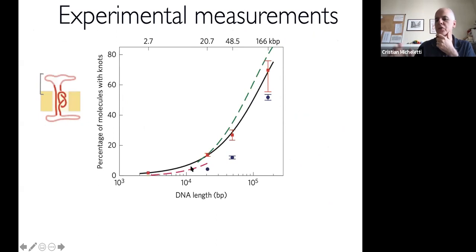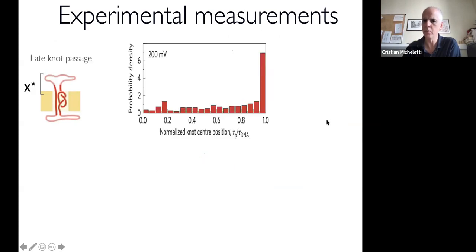First, regarding the incidence of knots, this is what they were able to measure. They measured the spontaneous incidence of knots in DNA of up to 166 kilobase pairs. With gel electrophoresis, you are stuck at 10 kilobase pairs.